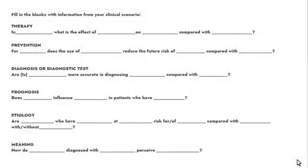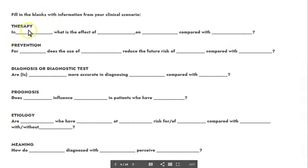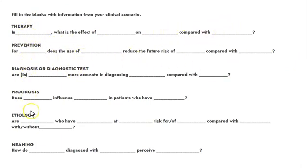What I mean by that is we have a plug-and-play option when it comes to inserting your PICO elements into a sentence structure that will make sense to readers and to you, the researcher, when you're going about your research. You'll notice that you have blanks here and you'll just insert your PICO elements into the blanks, and that is true for each type.